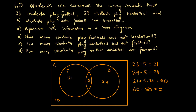So we've represented the information in the Venn diagram. How many students play football but not basketball? That's 21. How many students play basketball but not football? That's 24. And how many students play neither basketball nor football? That's 10.